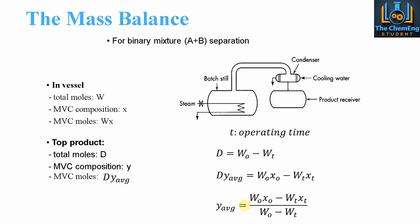If we rearrange this we can get the equation for Y average — the average composition of the MVC in the vapor phase. This is a very important parameter when modeling our systems, because we can then adjust our reflux ratio in order to get a specified value.